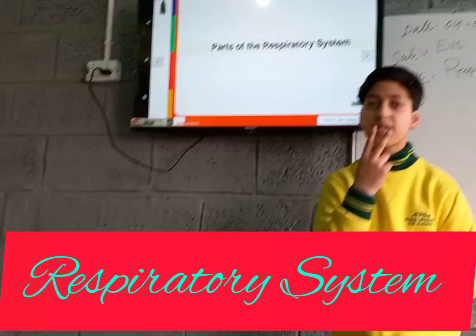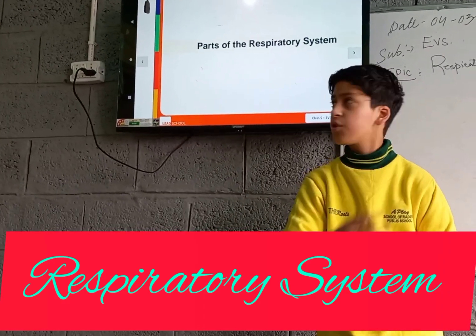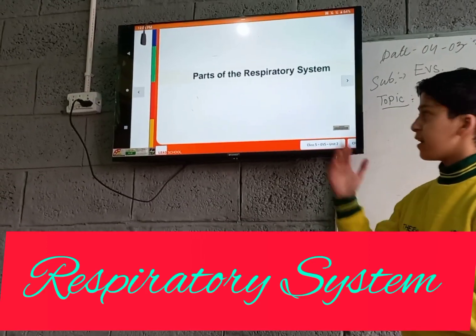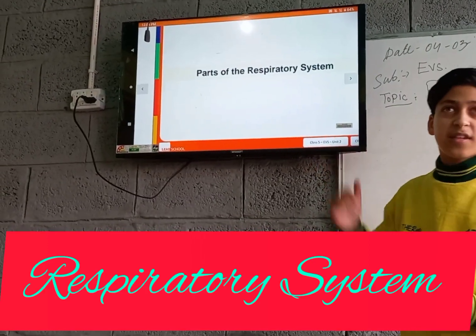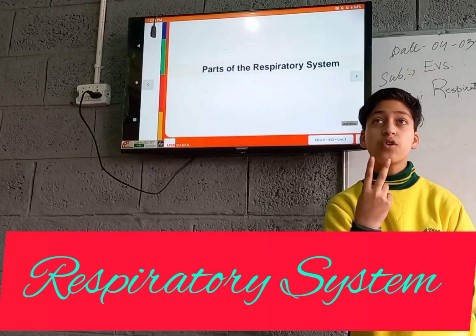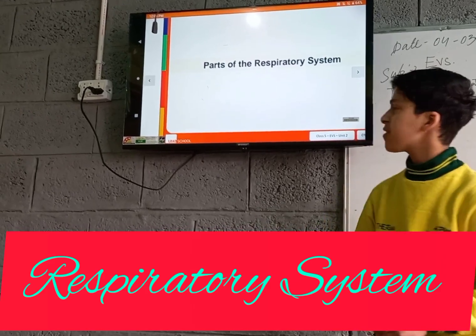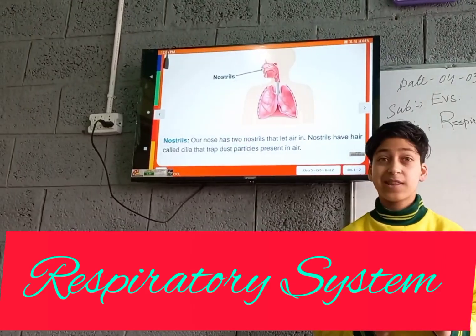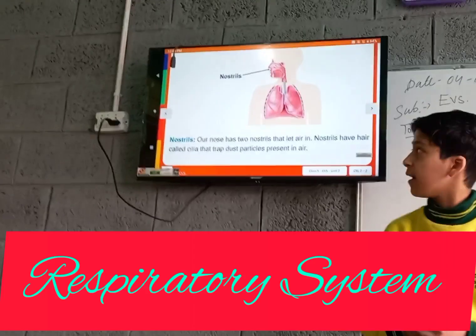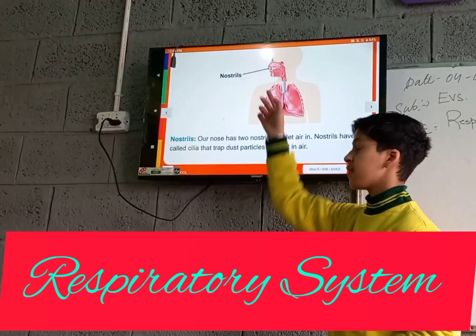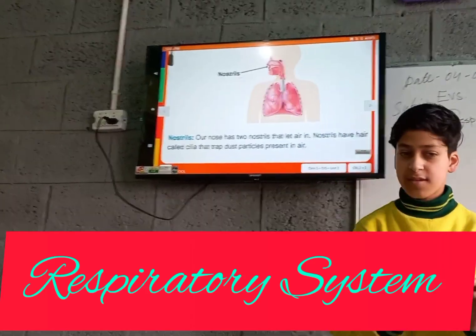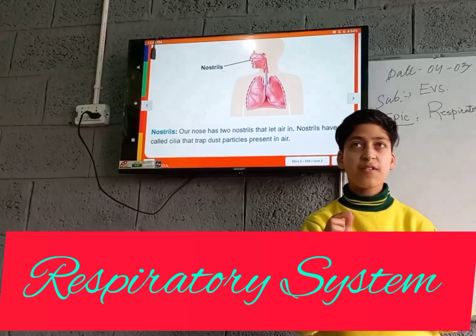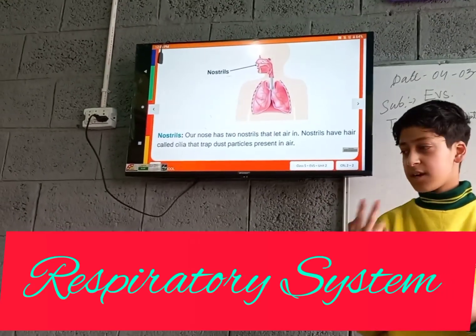The first part is the nostrils. The two holes present in our nose are called nostrils. Inside the nostrils there is a hair-like structure present called cilia. The cilia stop tiny dust particles from entering our body.